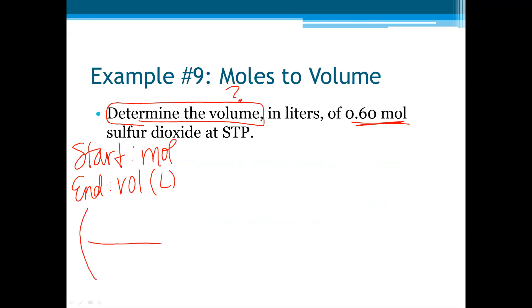Then we put our number from the problem over one, 0.60 moles over one. And then we look at the mole map to see how we go from the mole circle up to the volume circle. And that tells us to put 22.4 liters in the numerator and one mole in the denominator.